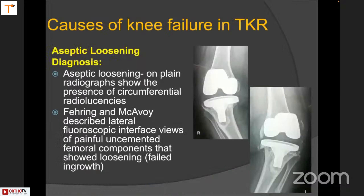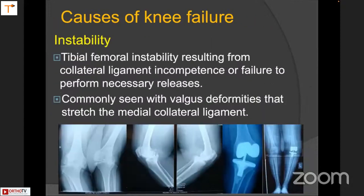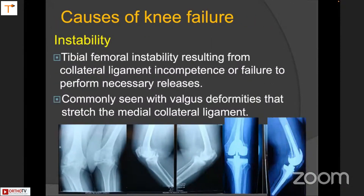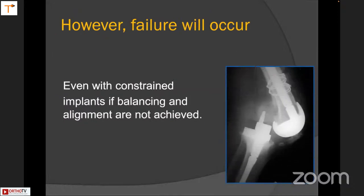There were various causes — aseptic loosening and instability, which was not really recognized back then. Today, instability is a chapter in its own right and you can spend a whole day discussing it. You can have tibiofemoral instability in the sagittal plane, coronal plane, rotational plane; mid-flexion instability; hyperextension instability. It happens when severe deformities are corrected and when the collateral ligaments are compromised.